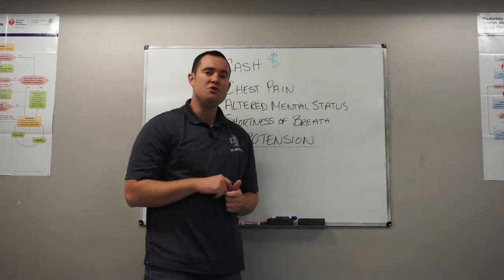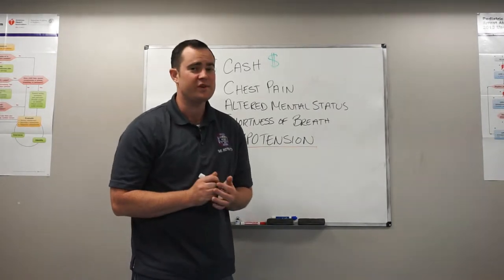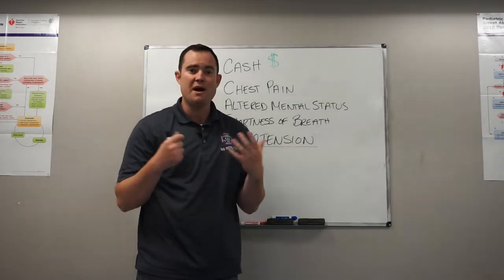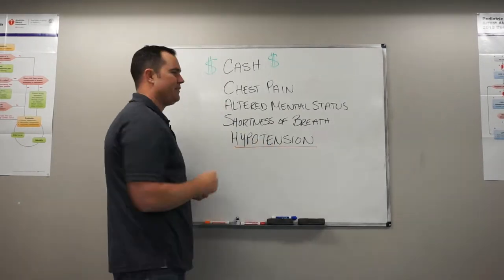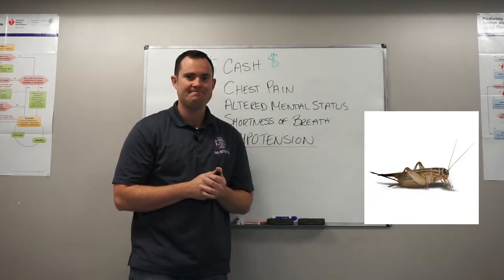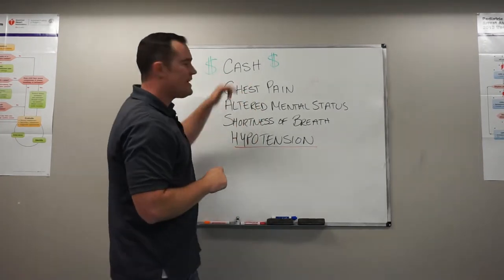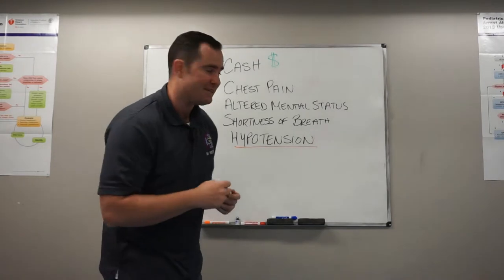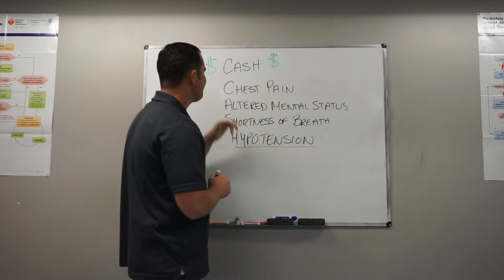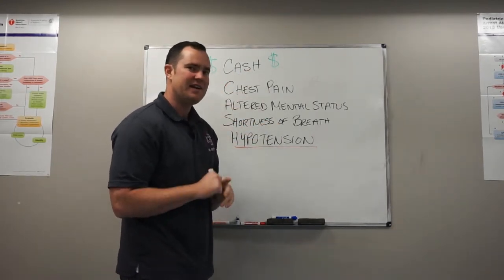You've already determined that this patient is unstable — but how? There are a couple of methods. The first one you might already be familiar with is called CASH. C stands for chest pain, A stands for altered mental status, S stands for shortness of breath, and H — which I've underlined — stands for hypotension.